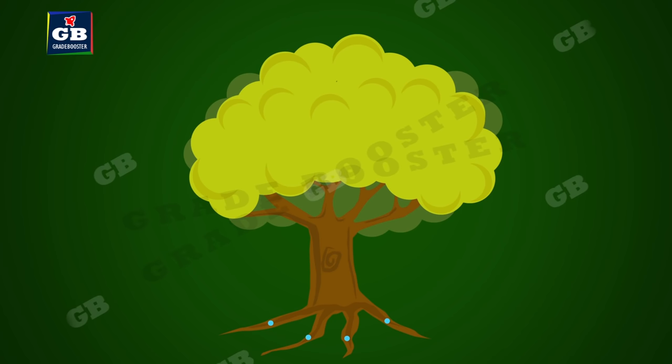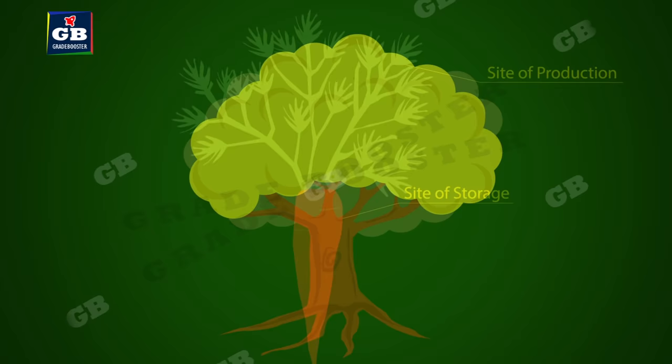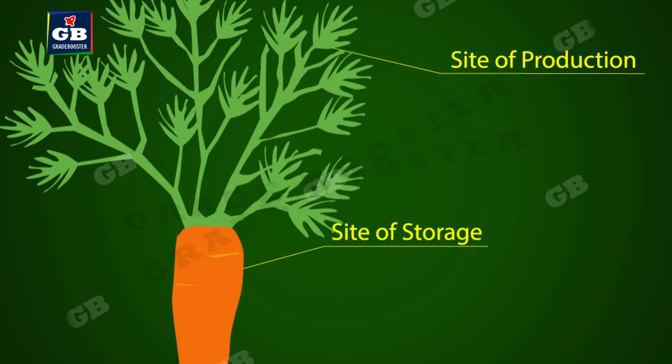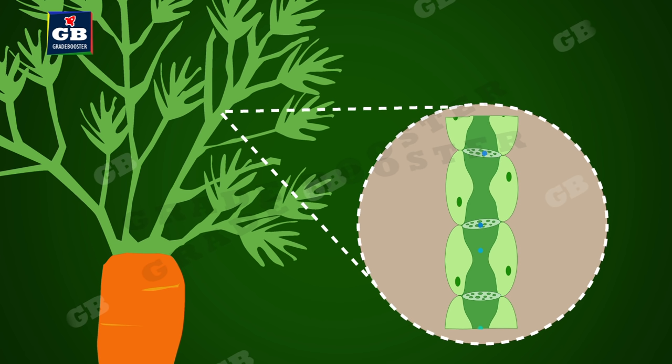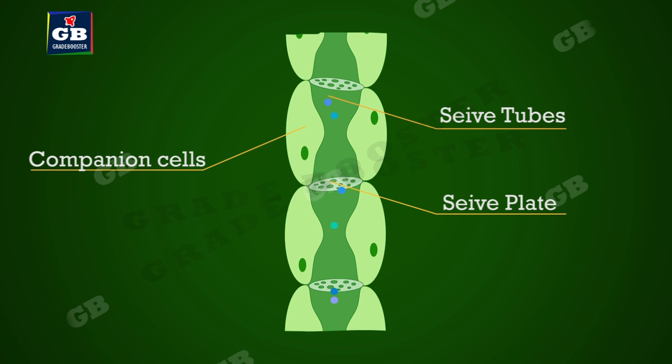Plants have slow transport systems because of their low energy needs. Materials in plants are mainly transported in two pathways. First — food materials from the site of production to the site of storage, from leaf to stem or root, through a conductive tissue called phloem. The transport of soluble products of photosynthesis from the leaf to other parts is called translocation. Translocation of food and other substances takes place in the sieve tubes with the help of adjacent companion cells, in both upward and downward directions.